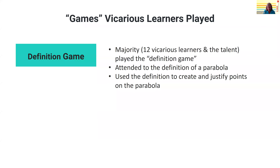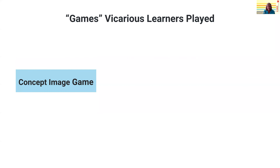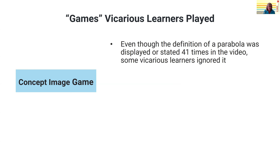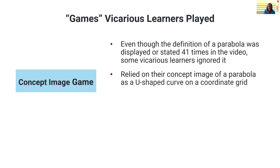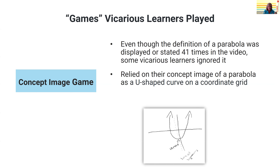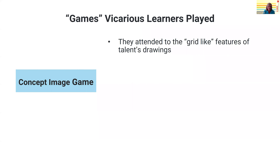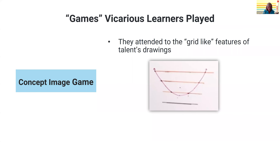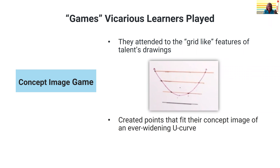A number of other students played a game called the concept image game. It was striking to us that even though the definition of a parabola was displayed or stated 41 times in the videos, some vicarious learners ignored it and instead relied only on their concept image of a parabola as a U-shaped curve on a coordinate grid. They attended to grid-like features of the talent's drawing — things like those parallel lines Sasha and Keone drew, and different measurements they took — and used those to create points that fit their concept image of an ever-widening U-curve, even when it resulted in incorrect points that didn't fit the definition.